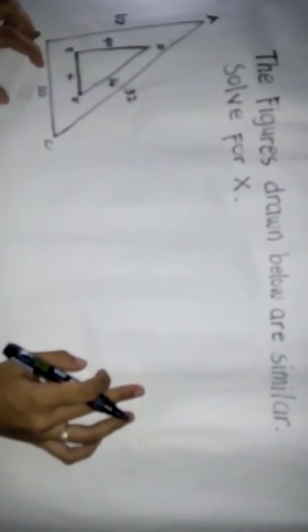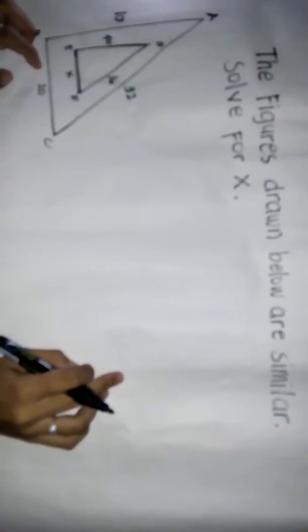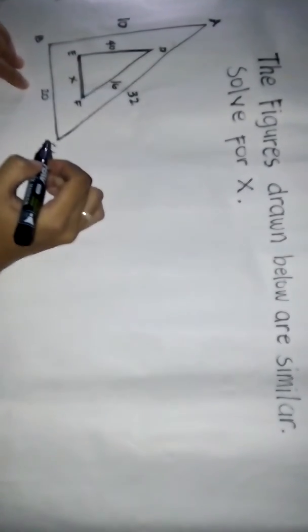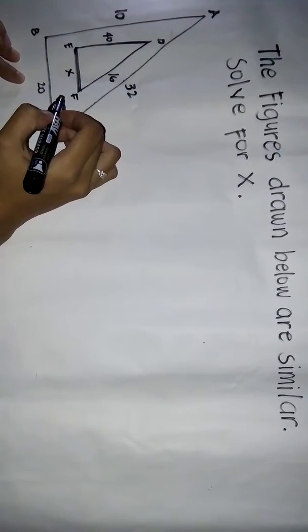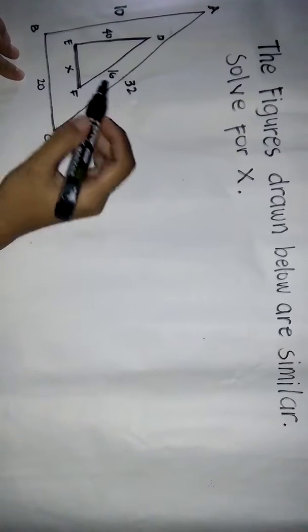Okay, let's start. If two triangles are similar, then the ratio of the corresponding sides will be equal. Here, we know that triangle ABC is similar to triangle DEF, so the ratio of the corresponding sides will be equal.